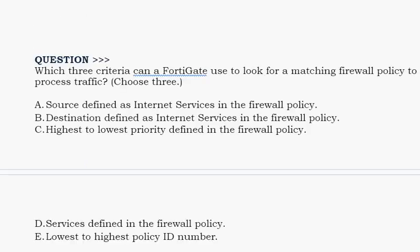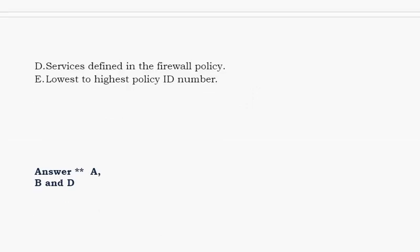Next question: Which three criteria can a FortiGate use to look for a matching firewall policy to process traffic? Choose three options. Option A: source defined as internet services in the firewall policy. Option B: destination defined as internet services in the firewall policy. Option C: highest to lowest priority defined in the firewall policy. Option D: services defined in the firewall policy. Option E: lowest to highest policy ID number. The correct answer is Option A, B, and Option D.